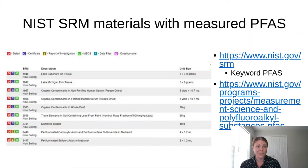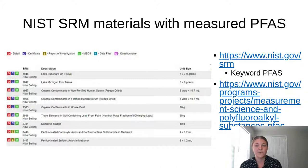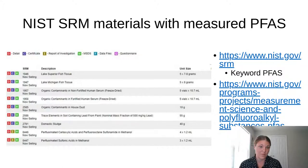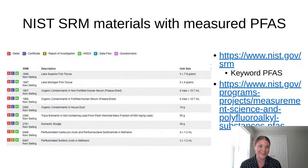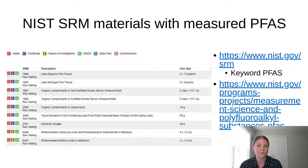Specifically at NIST, we currently have 10 standard reference materials with measured PFAS. The list includes fish tissues, human serum, house dust, soil, domestic sludge, and neat materials in methanol. Follow the link to look into what measurements have been made. The benefit of a NIST SRM is that you know the concentration and the matrix, helping provide a better calibration measure to increase the quality of measurements.